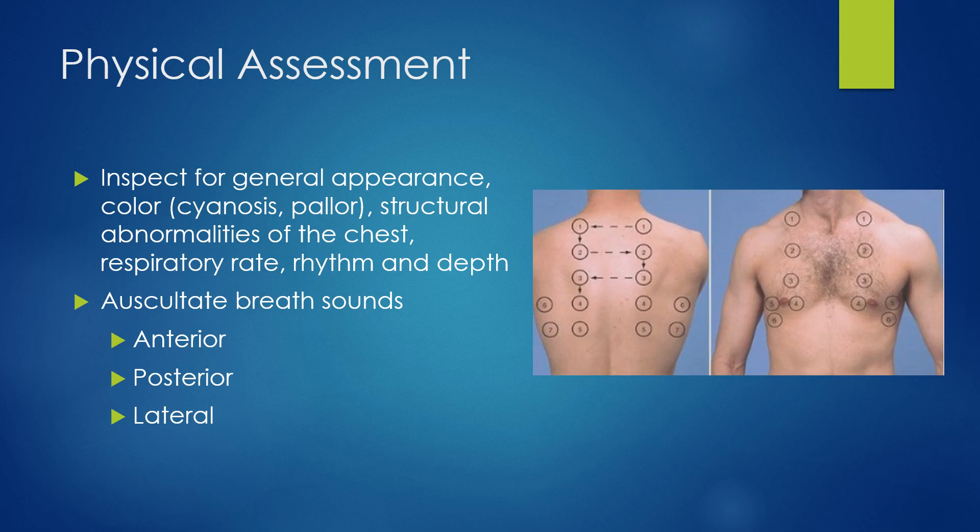Then we can look at their chest, starting with inspection. Is the trachea midline? Do you see any structural abnormalities on their chest? Is their chest expansion equal? We may need to put our hands on their chest to assess whether it is expanding equally on both sides.